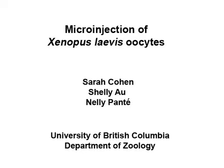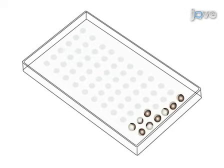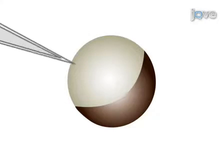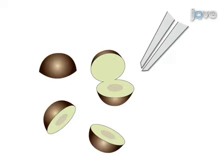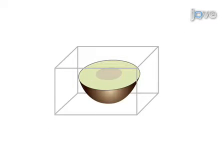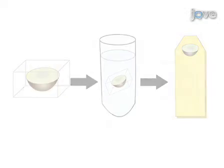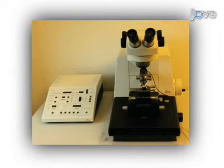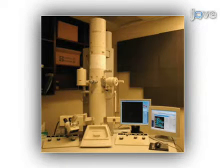Microinjection of Xenopus laevis oocytes followed by thin sectioning electron microscopy is an excellent system for studying nucleocytoplasmic transport. In this experiment, oocytes are defolliculated with collagenase and stage 6 oocytes are selected and placed in a multi-well dish. The oocytes are then microinjected with a nuclear import substrate. After incubation at room temperature to allow the substrate to enter the nucleus, the oocytes are fixed, dissected, embedded in low-melting agarose, fixed again with osmium tetroxide, dehydrated, and embedded in an epoxy resin. The epoxy-embedded samples are sectioned with an ultramicrotome, placed on a copper EM specimen grid, stained, and visualized under a transmission electron microscope.